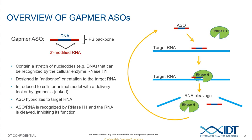Today's webinar will exclusively cover gapmer antisense oligos, which use endogenous RNaseH1 to degrade a target RNA. In the cell, RNaseH1 recognizes an RNA-DNA heteroduplex and cleaves the RNA strand. The gapmer ASO is chemically modified to increase nuclease resistance and binding affinity, but it needs a stretch of at least 8 to 10 DNA bases for RNaseH1 recognition. Once RNaseH1 cleaves the RNA target, it is degraded by other cellular nucleases, and the ASO is freed to recycle and find another target RNA, making this process catalytic.